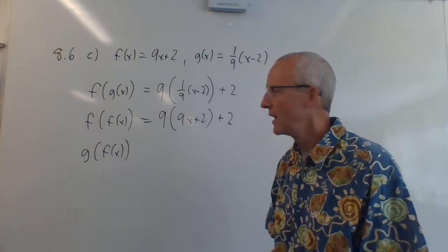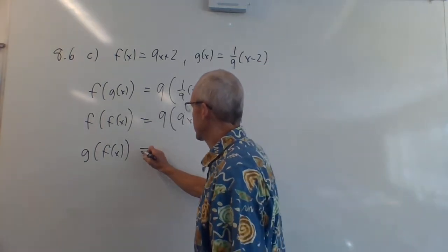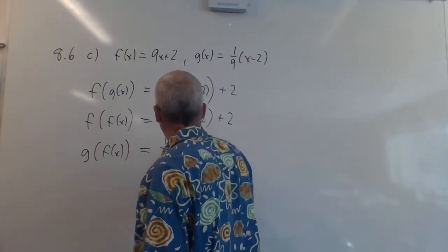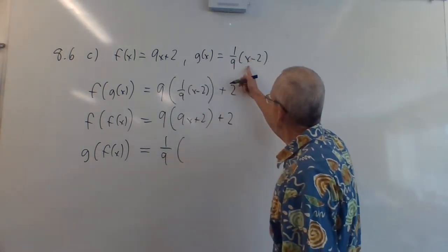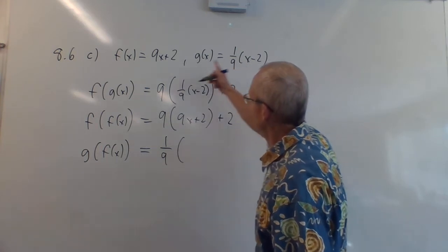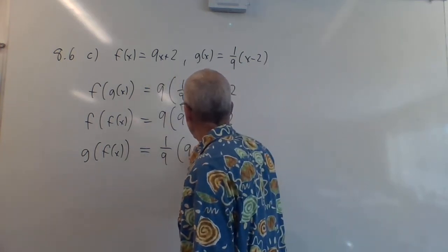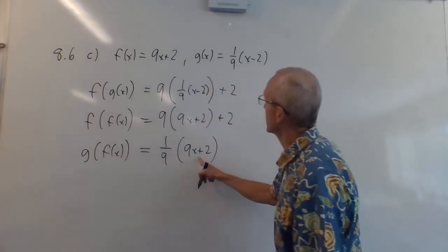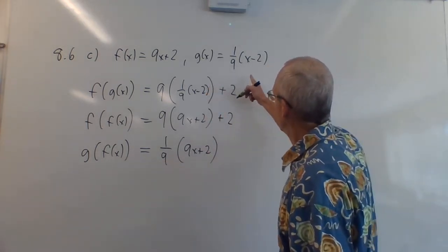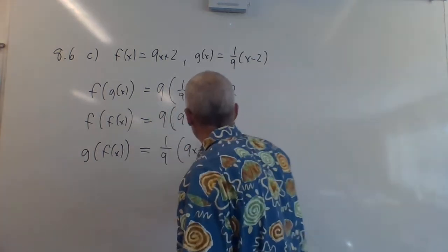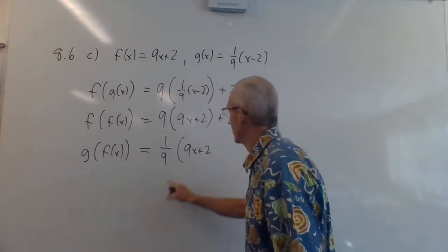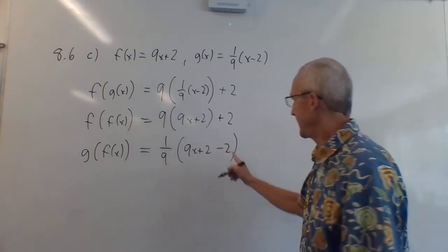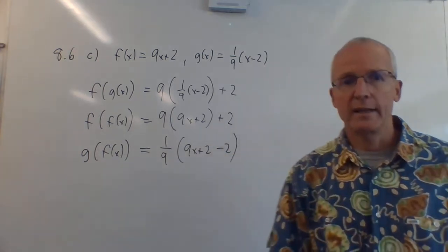That's not so bad, you just have to use this notation. On g of f of x, start off with g now, so you go 1/9, and before you write the x, you go: wait, everywhere there's an x, I plug in f(x). So you go 9x plus 2, because that's f of x, you plug in for x. Then you go minus 2. And of course, that's going to be 0, but you can just leave it like that.